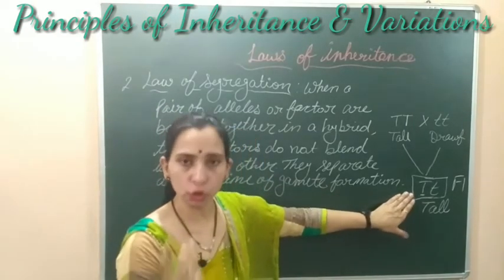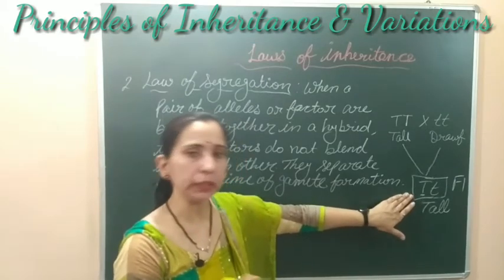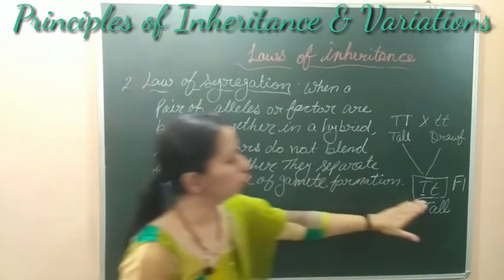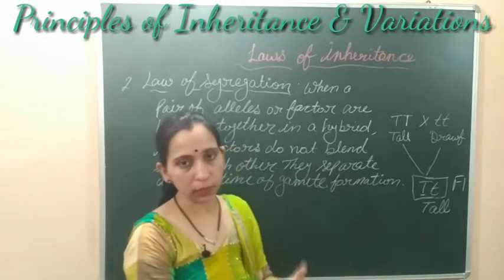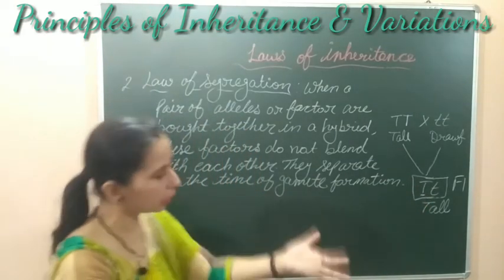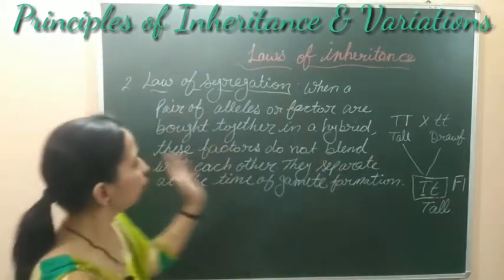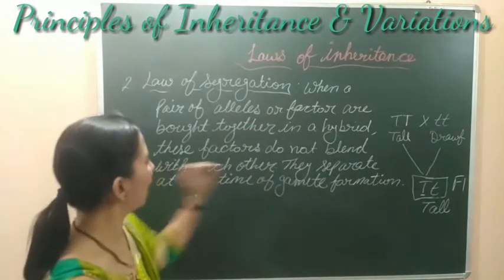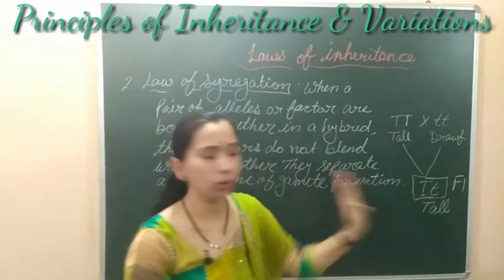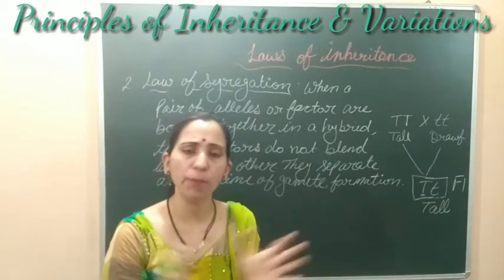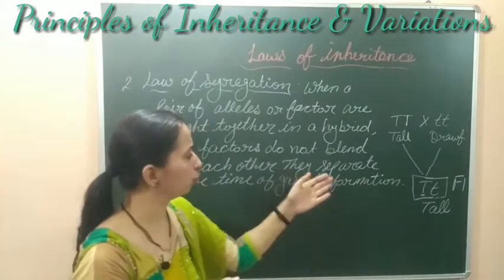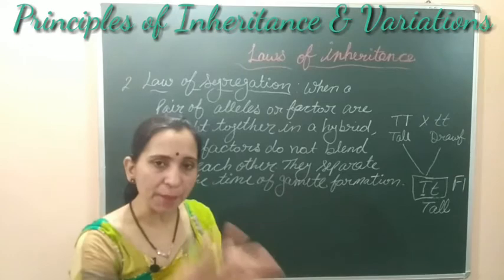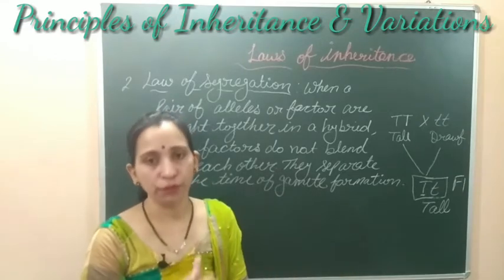This hybrid contains two alleles — one is the dominant allele and the other is the recessive allele. They are present as a pair in the hybrid. These factors do not blend with each other; they do not get mixed. They get separated during gamete formation.